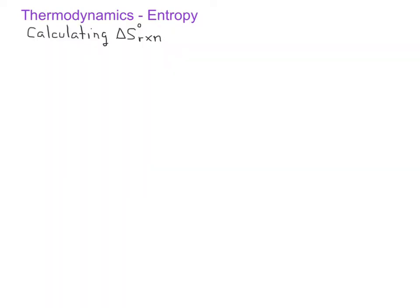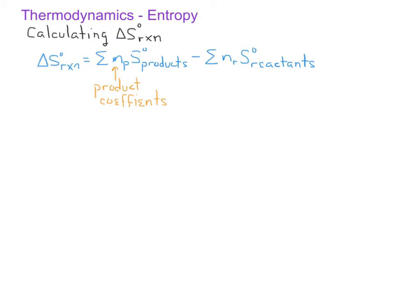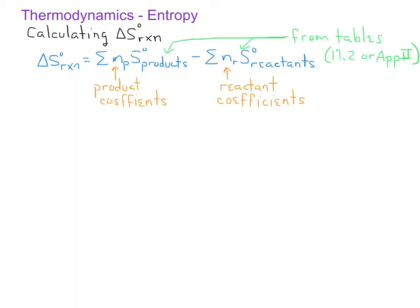In your General Chemistry 1 class, you learned how to calculate the standard enthalpy change for a reaction based on the standard enthalpies for the reactants and products. We can use a similar equation to find the standard entropy change for a reaction. The standard entropy change for a reaction is the sum of the standard molar entropies for the products multiplied by their coefficients, minus the sum of the standard molar entropies for the reactants multiplied by their coefficients. Values for standard molar entropies can be found in Table 17.2 or in Appendix 2 of the textbook.